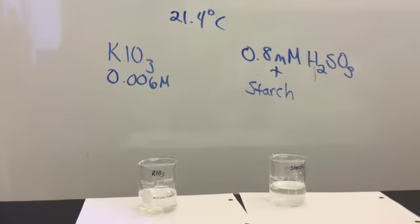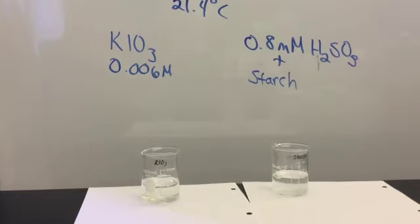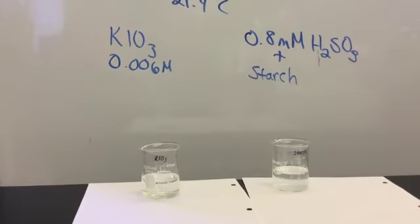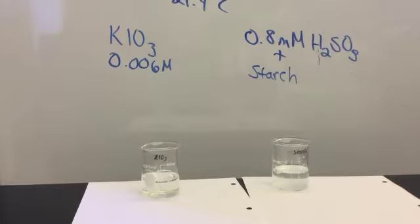Notice that both of our solutions are colorless and the starch is very slightly cloudy, but the potassium iodate is clear. Ideally we would have a clear starch solution, but soluble starch isn't completely soluble and sometimes there's a slight cloudiness to it.